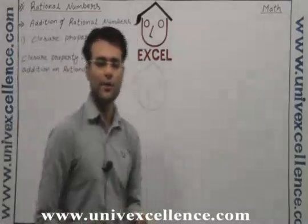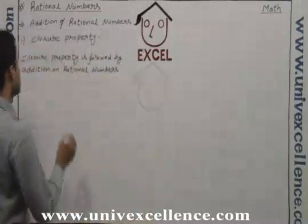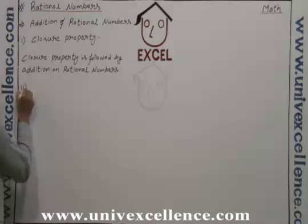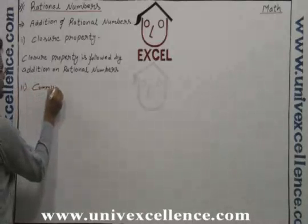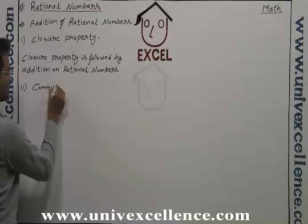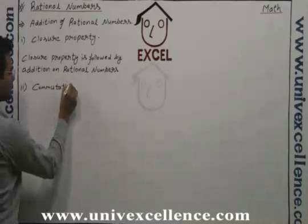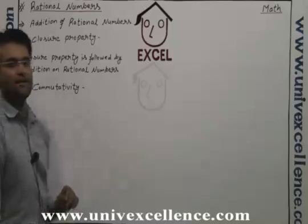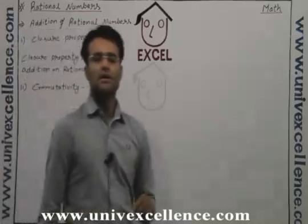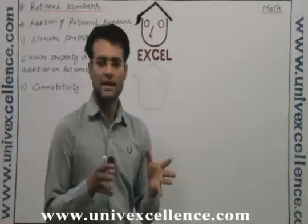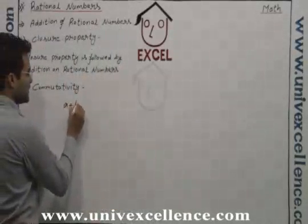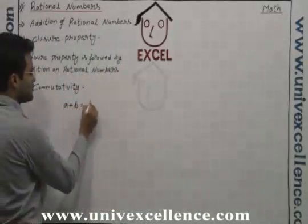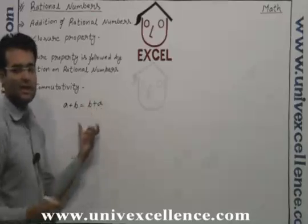Now let's look at another property, which is the commutative property. Commutativity says that a plus b should equal b plus a.